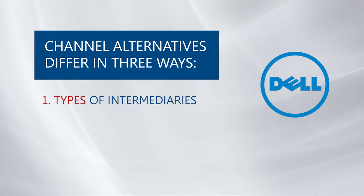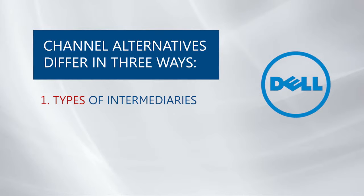The type of intermediaries refers to the type of channel members available to carry out the channel work. Using many types of resellers in a channel provides both benefits — you can reach more different buyers — but also drawbacks, because it is difficult to manage and control, and conflict may arise. This would be a long channel. Dell, for example, decided to use a short channel, meaning selling through the internet.